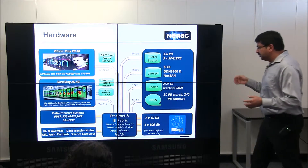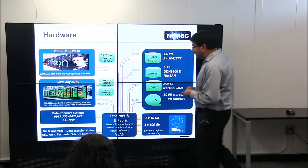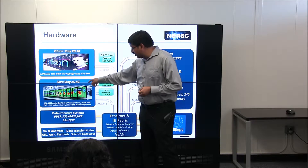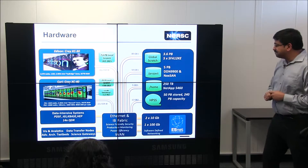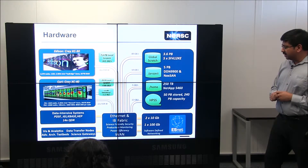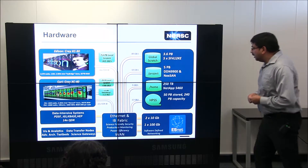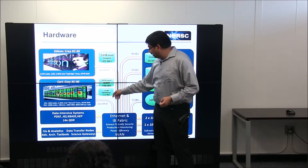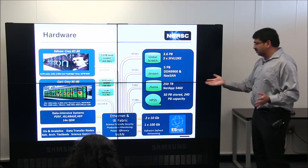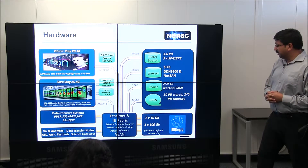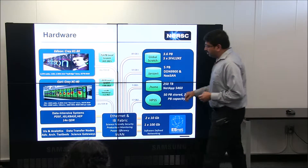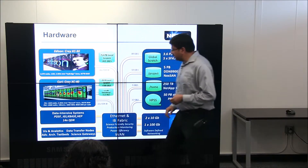This is the NERSC machine Cori shown in schematic form — a Cray XC40 system where we'll be attempting these scaling experiments. It currently has about 9,600 Knights Landing nodes, making it a 30-petaflop class system. It has a burst buffer — an SSD pool of memory about 1.5 petabytes in size supporting high-rate I/O, with quite good bandwidth. Cori with Knights Landing is our target platform.